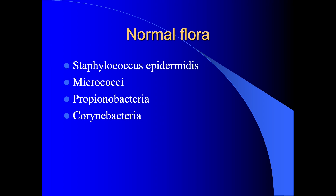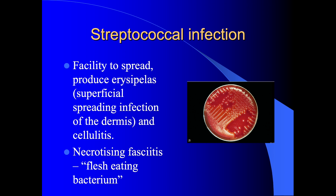One of the most common gram-positive infections to infect the skin are caused by streptococci, which have a facility to spread. Superficial infection is called erysipelas, and deeper infections confined to the skin produce cellulitis. The most important streptococcal infection, which is potentially fatal, can produce a condition called necrotising fasciitis — the so-called flesh-eating bacterium.